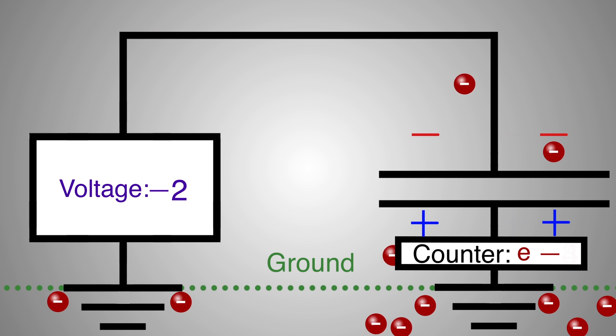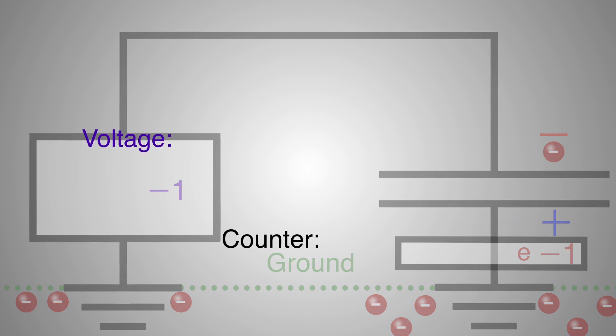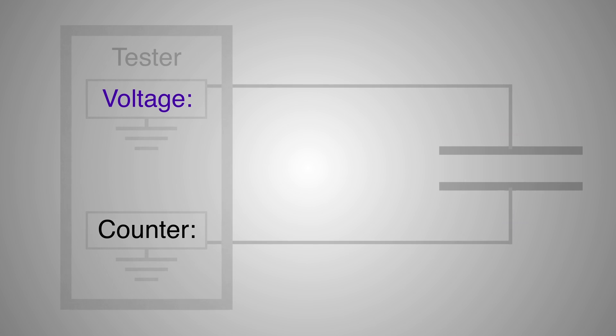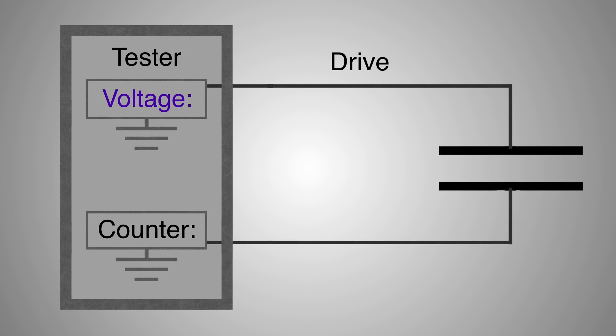The tester packages both the voltage generator and the electron counter in the same enclosure. On Radiant systems, the drive delivers the voltage stimulus while the return counts the electrons moving into or out of the other side of the capacitor. It is important that the return holds its side of the capacitor at zero volts no matter what happens on the drive side. The reason is so the drive voltage always represents the voltage across the capacitor.